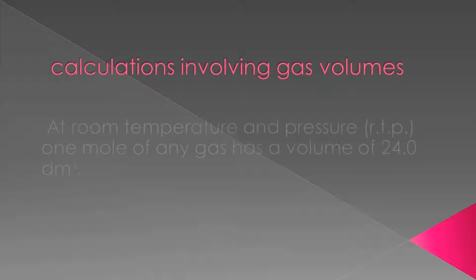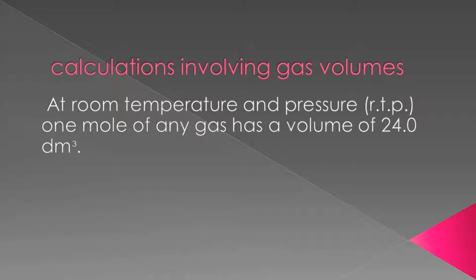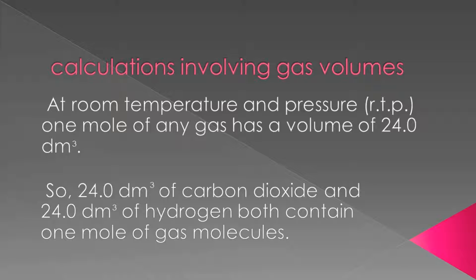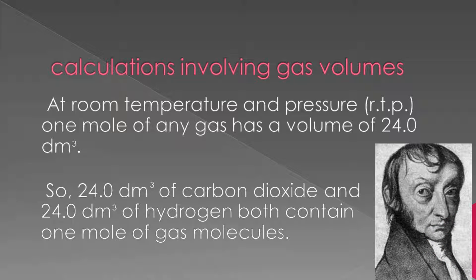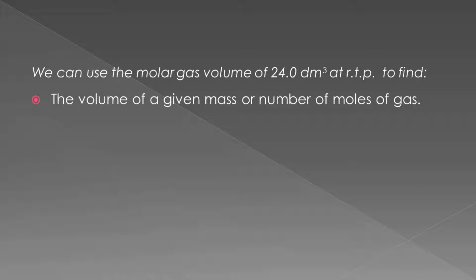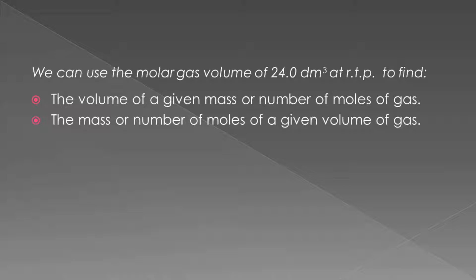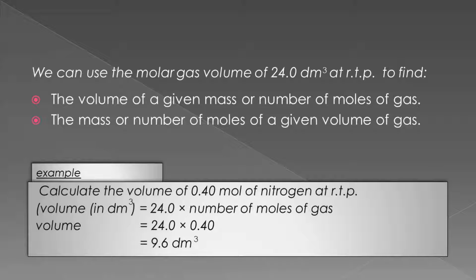Calculations involving gas volumes. At room temperature and pressure, 1 mole of any gas has a volume of 24 dm³. So 24 dm³ of carbon dioxide and 24 dm³ of hydrogen both contain 1 mole of gas molecules. This is called Avogadro's hypothesis. We can use this hypothesis to find the volume of a gas if we know the number of moles, or vice versa. For example, the volume of 0.4 moles of nitrogen at RTP is: 24 × 0.4 = 9.6 dm³.